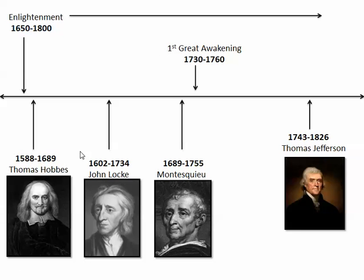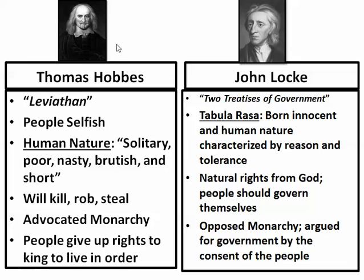Thomas Hobbes is not in our standards, but I use him as a comparison to contrast the ideas of John Locke. John Adams says there was a change in thinking, and we're going to look at what changed from Hobbes to Locke. Then we'll talk about Thomas Jefferson, who wrote the Declaration of Independence and got his ideas from John Locke. We'll also briefly mention Montesquieu and then come back to him in Standard 5.